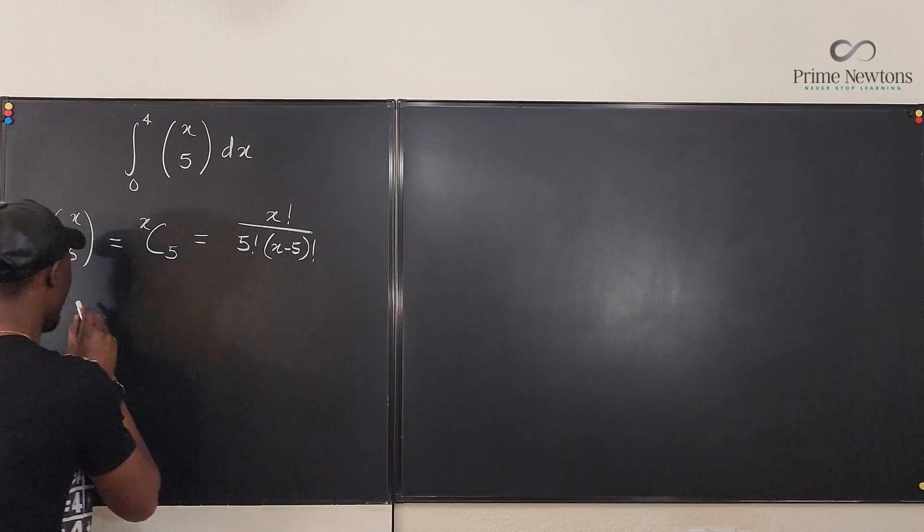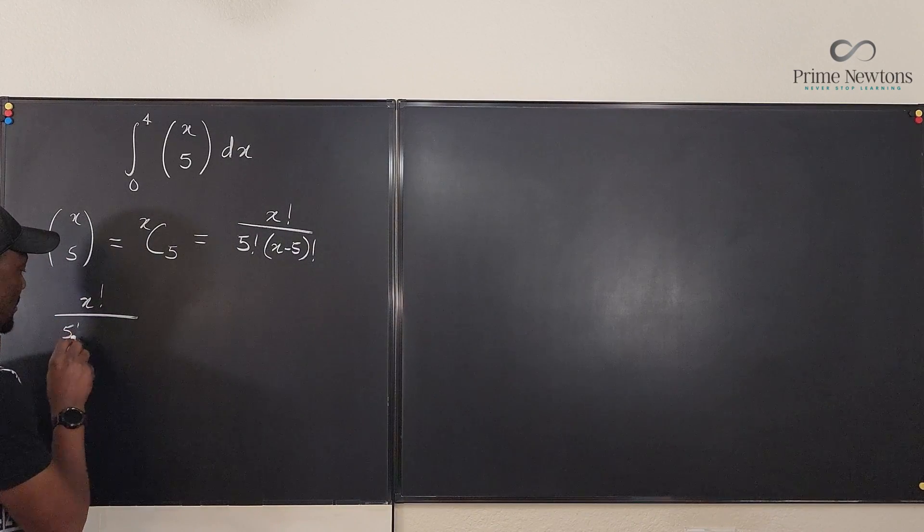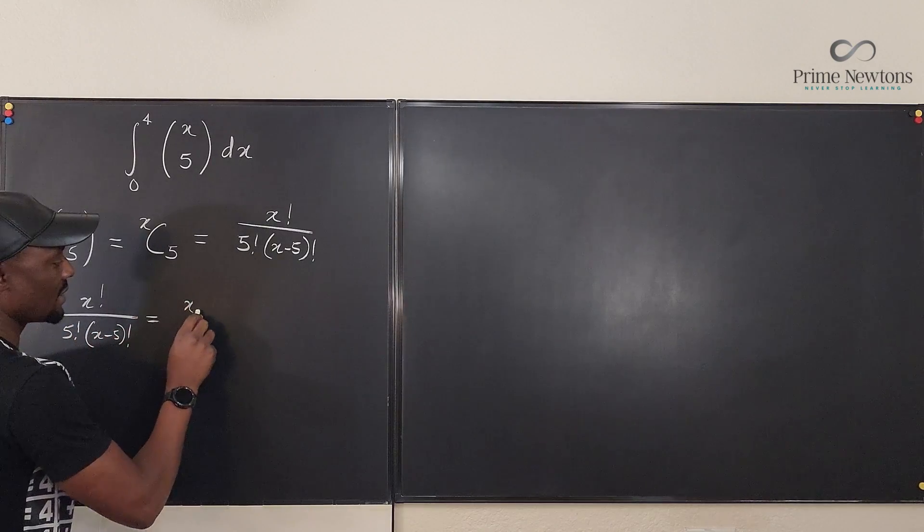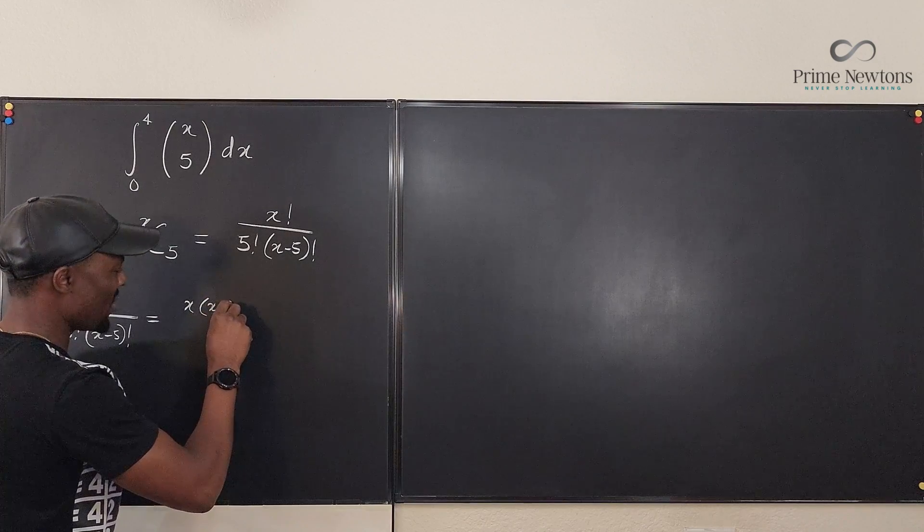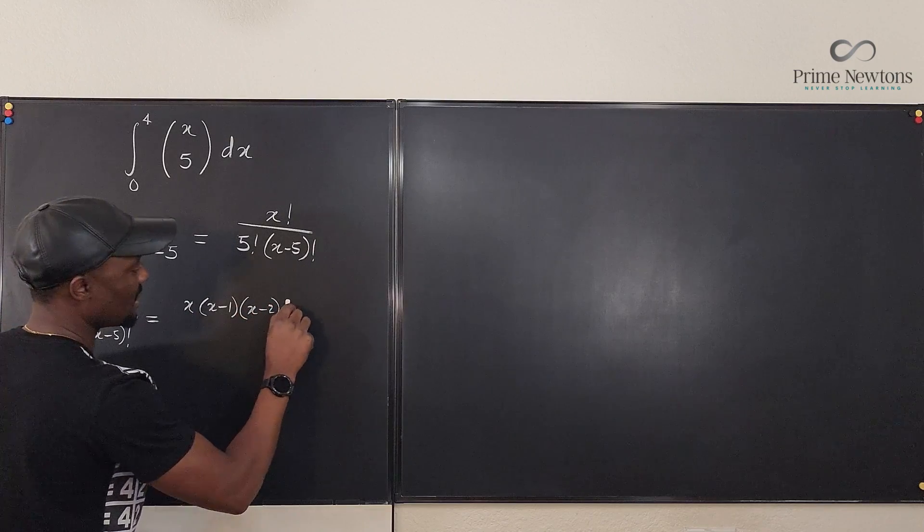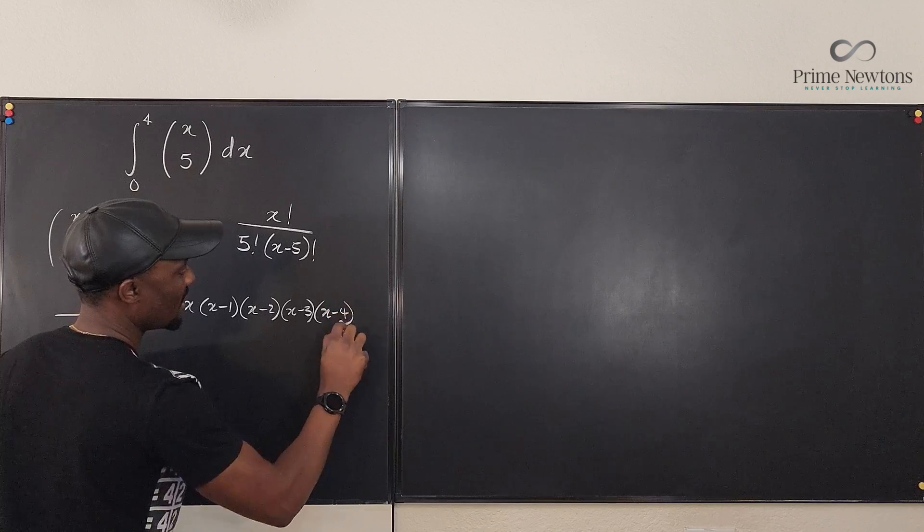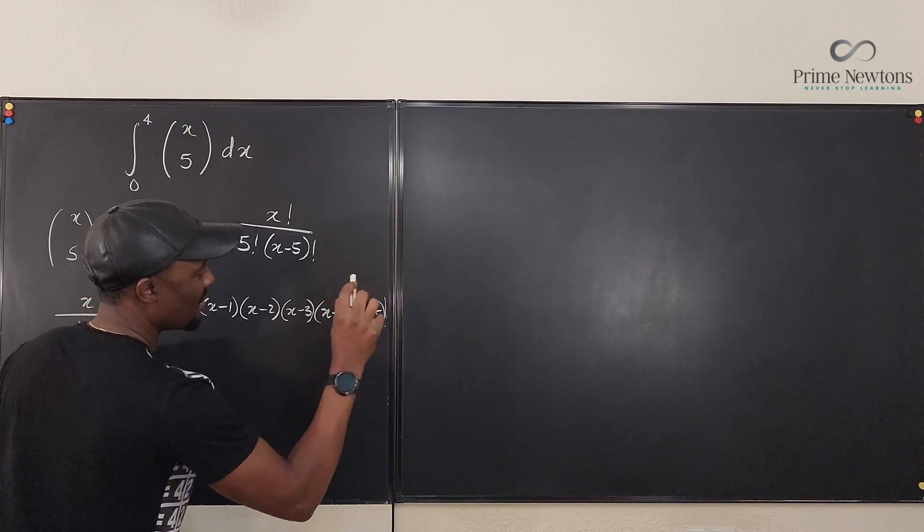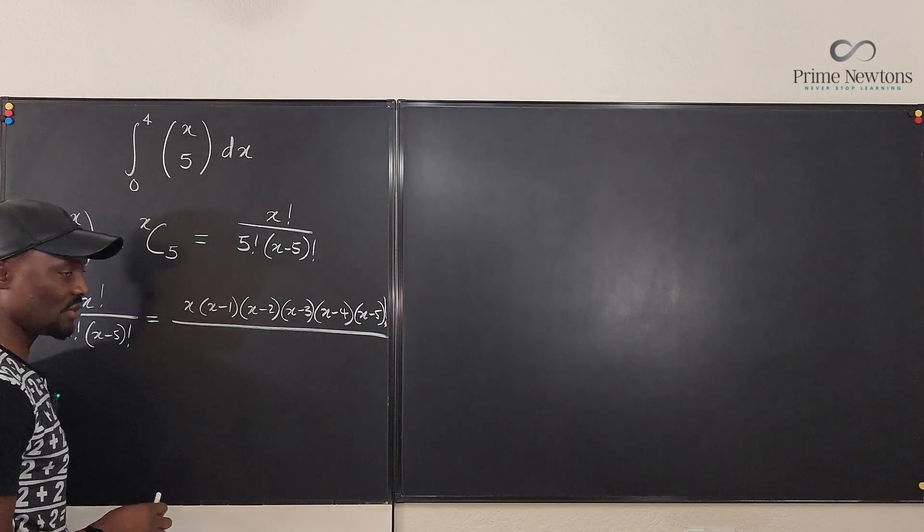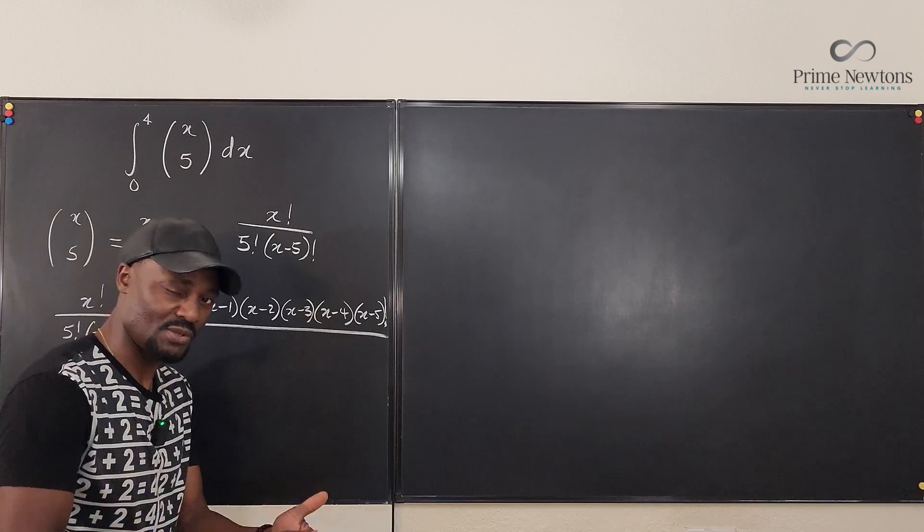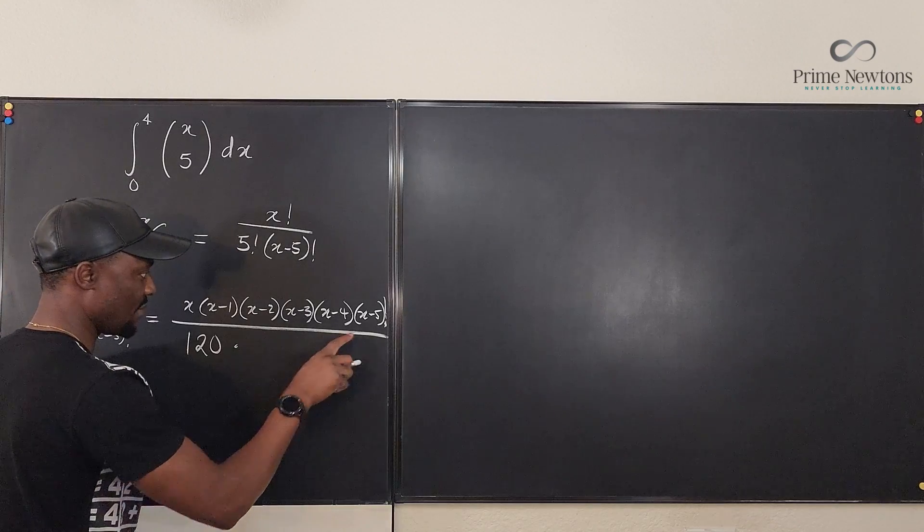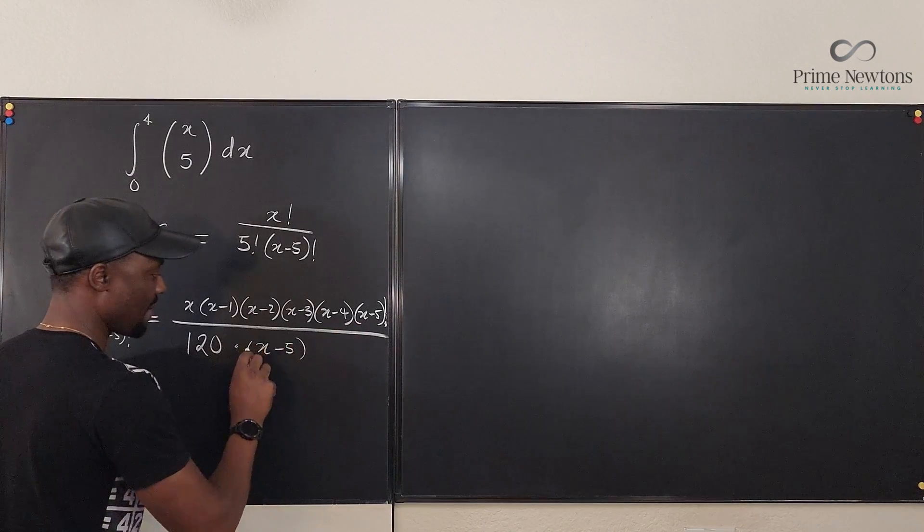Okay, so here, we can say that x factorial over 5 factorial times x minus 5 factorial will be x times x minus 1 times x minus 2 times x minus 3 times x minus 4 times x minus 5 factorial. I'd squeeze that in there. There's a factorial here. And we're going to divide it by 5 factorial. We know 5 factorial is 5 times 4 times 3 times 2 times 1. That's 120.